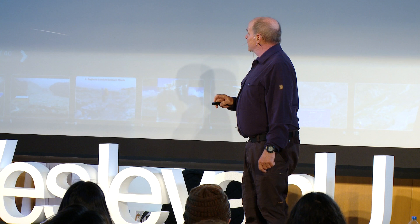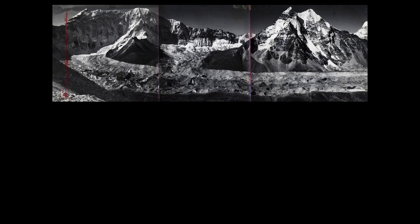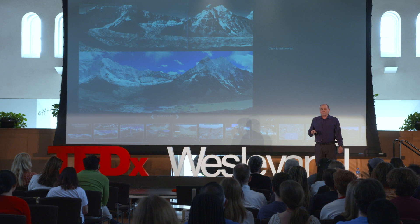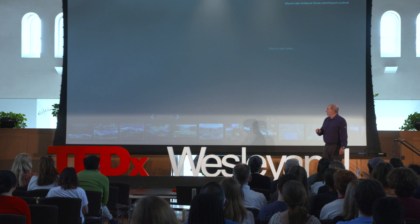It is a changing mountain world. If we look at photographs taken of glaciers in the Mount Everest area in the 1950s, and we go back and find the exact same photo point and take them again, we can see that what had been a debris-covered glacier back in the 1950s is now a large and potentially dangerous glacial lake. Potentially dangerous in the event of a glacial lake outburst flood, or GLOF.